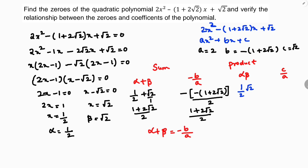In the same way, alpha times beta: alpha is 1/2 and beta is √2, so alpha times beta equals √2 over 2. And c by a equals √2 divided by 2. So clearly alpha times beta equals c by a. In this way we have verified the relationship between the zeros and coefficients. Thank you for watching, please subscribe to my channel.